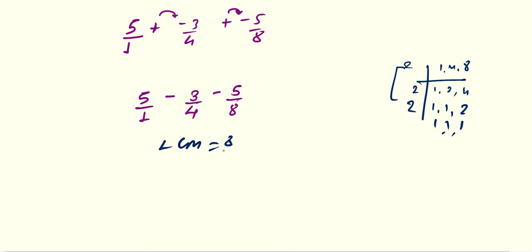So, 1 and 8. It is a multiple of 1. 1, 8, 8. So, 5 into 8 minus. 8 is a multiple of 4. 4, 2, 8. So, multiply 3 by 2 minus. 8, 1, 8. So, 5 into 1 upon 8.